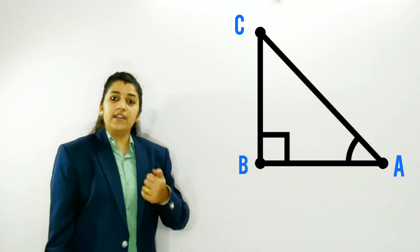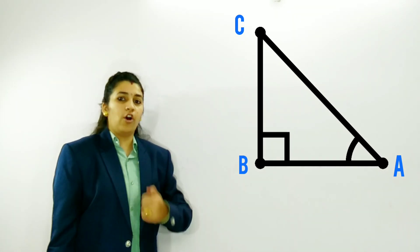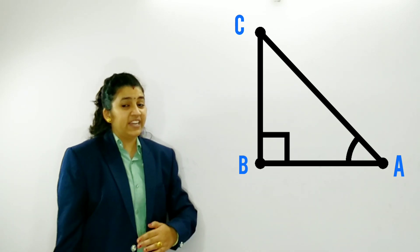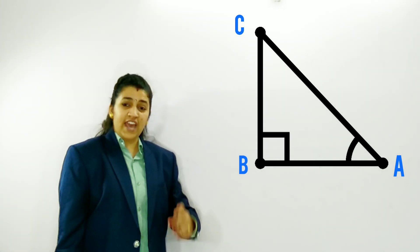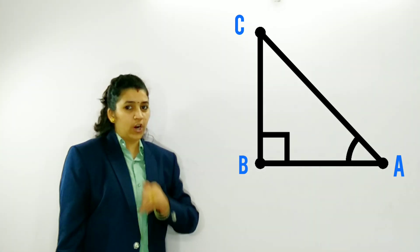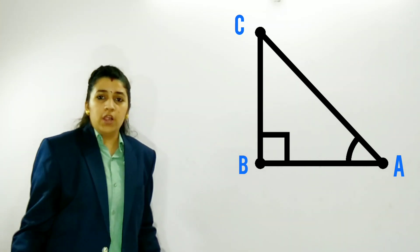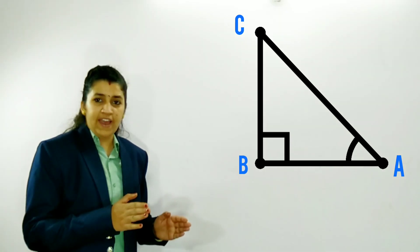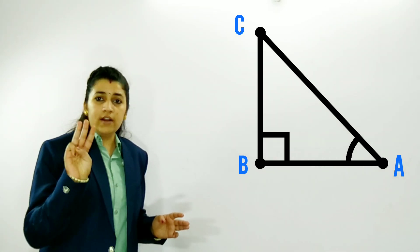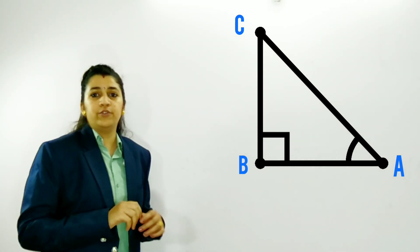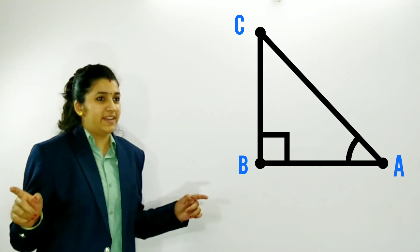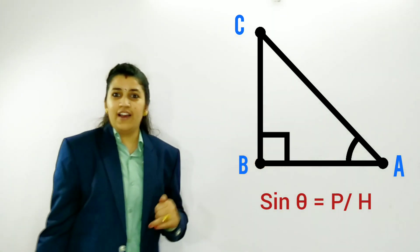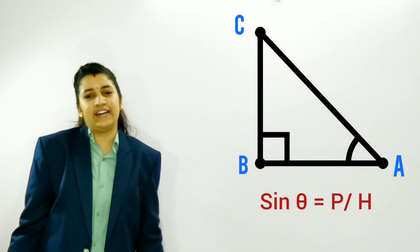The ratios are: sin theta, cos theta, tan theta, sec theta, cosec theta, and cot theta. This we all know. Now, to simplify it, just learn three ratios first — that is sin theta, cos theta, and tan theta.